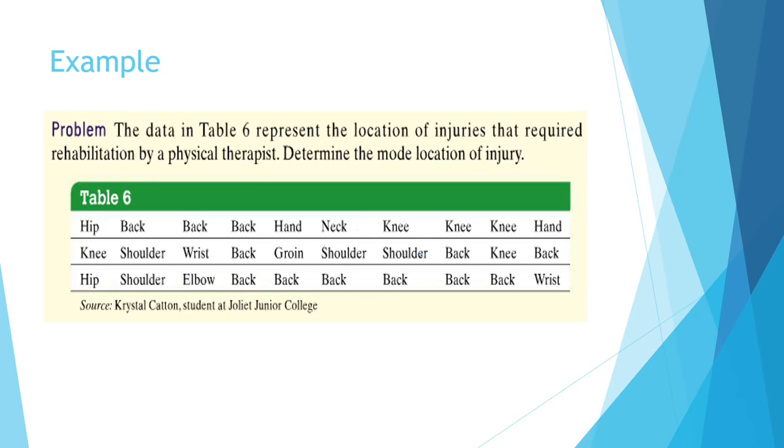The data here represents the location of injuries that require a physical therapist for rehabilitation. Determine the mode on location of injury. It looks like back is the mode. And the mode is most commonly used for this type of data, categorical data. The mode is most useful for categorical data because we can find out what the most common value is relatively quickly.